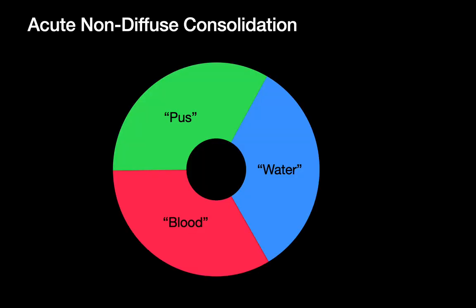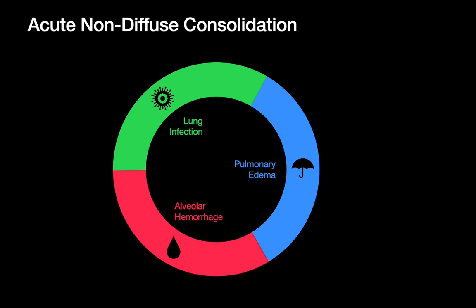If we asked you in medical school for a differential of patchy consolidation in the lungs, the familiar mantra would have been blood, water, pus — which for acute non-diffuse consolidation still holds true. We may be more fancy now — alveolar hemorrhage, lung infection, or pulmonary edema — but it boils down to these three categories. In radiology residency, we'll go further and remember three types for each category.